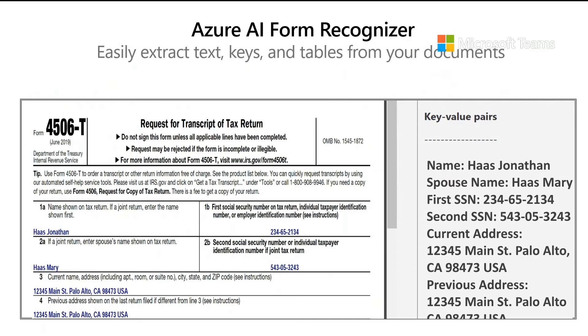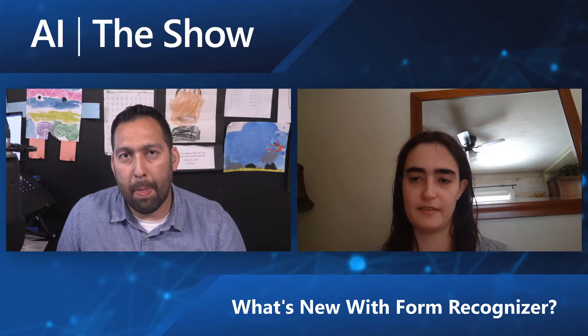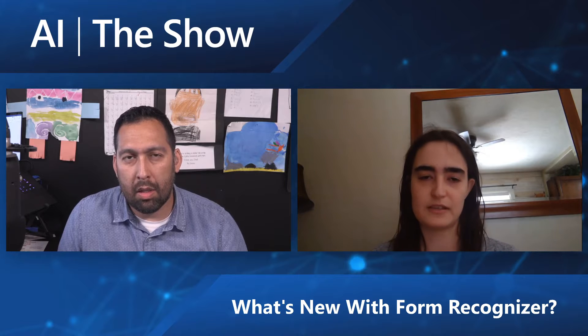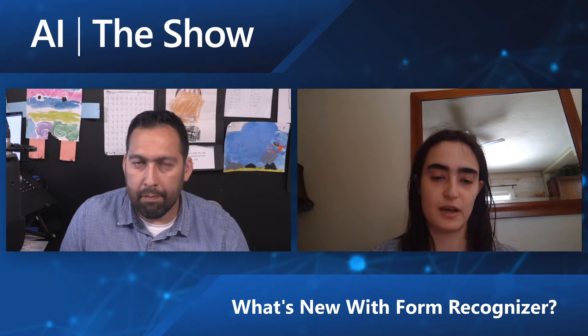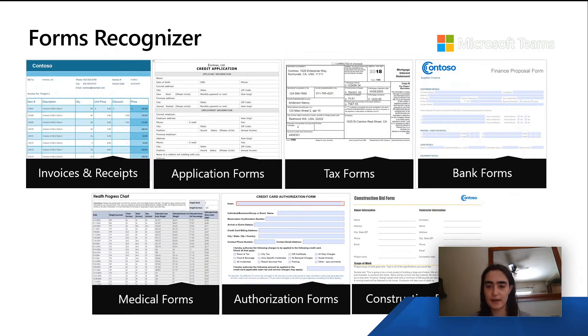With Form Recognizer, we have some pre-built forms but also what we call custom forms — the ability to actually train your own custom model to recognize the content that you care about. Different businesses and business processes have all kinds of forms, and with Form Recognizer you train a model to recognize your specific forms and the key-value pairs you want to extract. In essence, it's really any form your business uses.